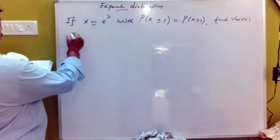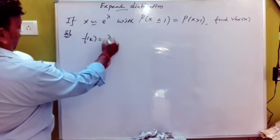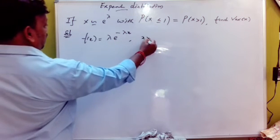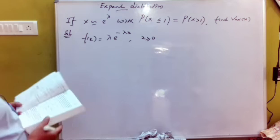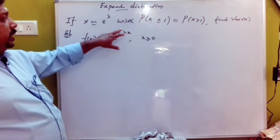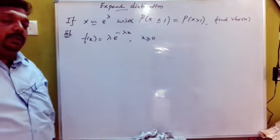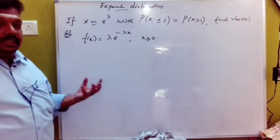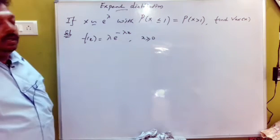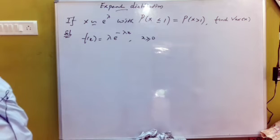The exponential distribution formula is: f(x) = lambda times e to the power minus lambda x. Compare with the Poisson distribution, where e to the power minus lambda times lambda to the x over x factorial — that is the Poisson distribution for rare events.